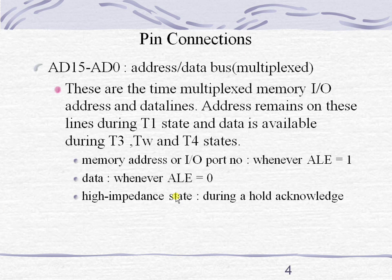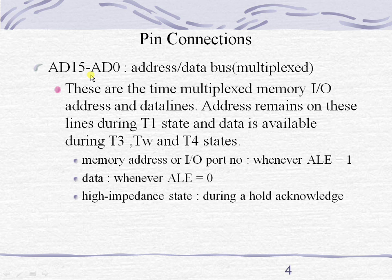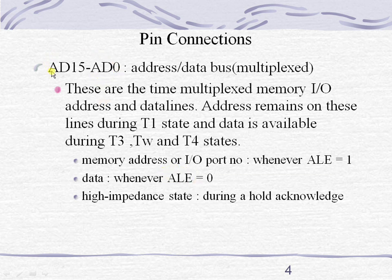Starting with AD0 to AD15, these pins are called multiplexed lines. If any line is carrying multiple forms of information, that line is called a multiplexed line. AD0 to AD15 are capable of carrying two forms of information — address and data — where A represents address and D represents data. A total of 16 multiplexed lines are present. Whenever the ALE pin is 0, it indicates these lines are carrying data information; if ALE is 1, it means they are carrying address information.